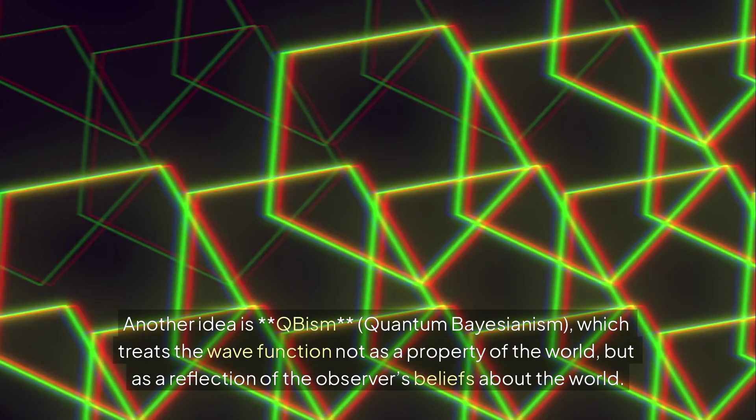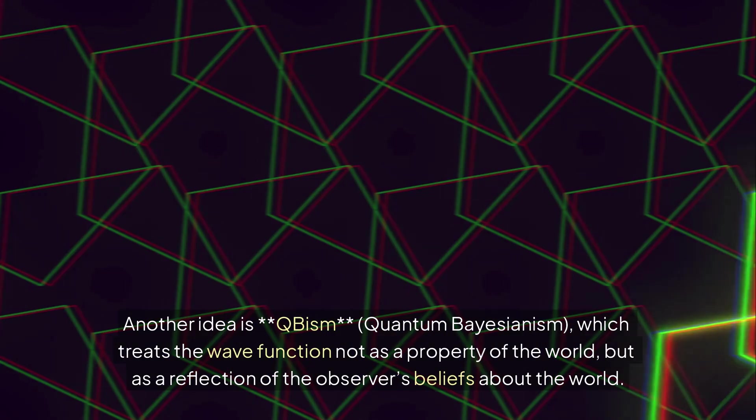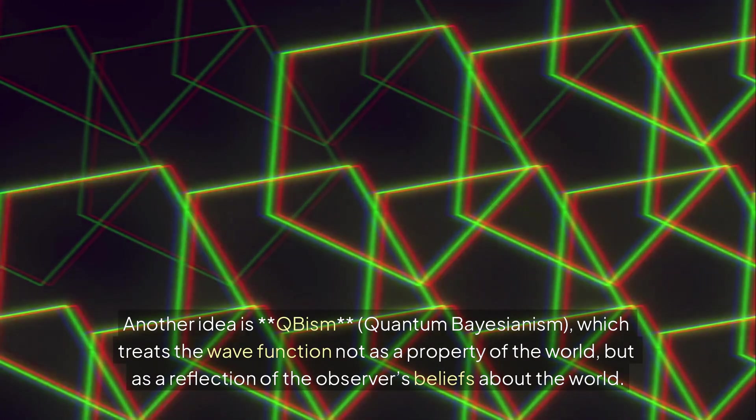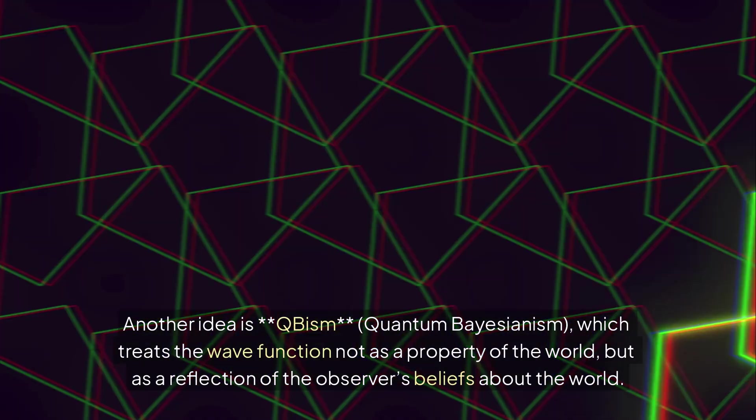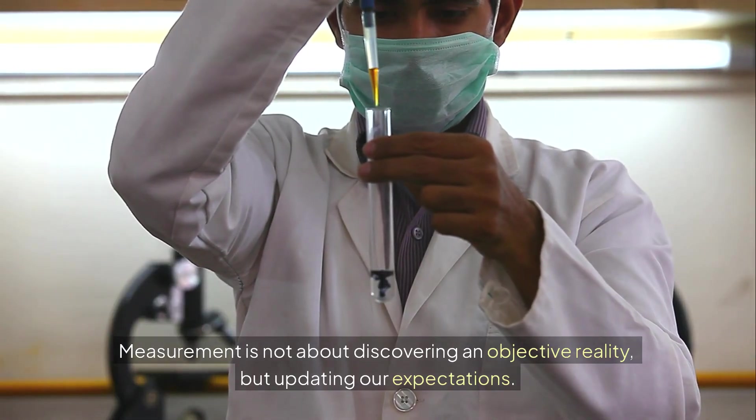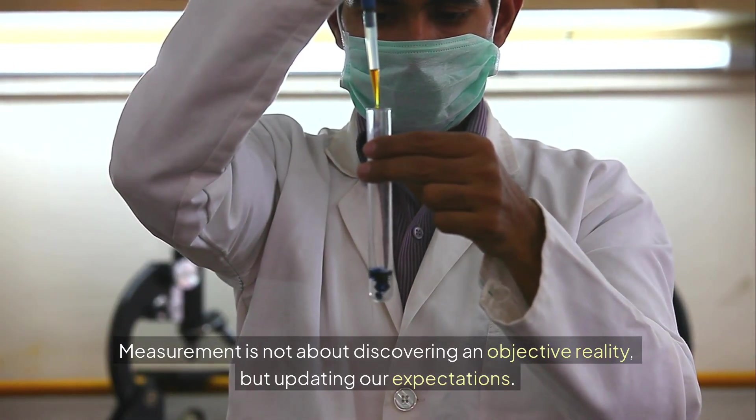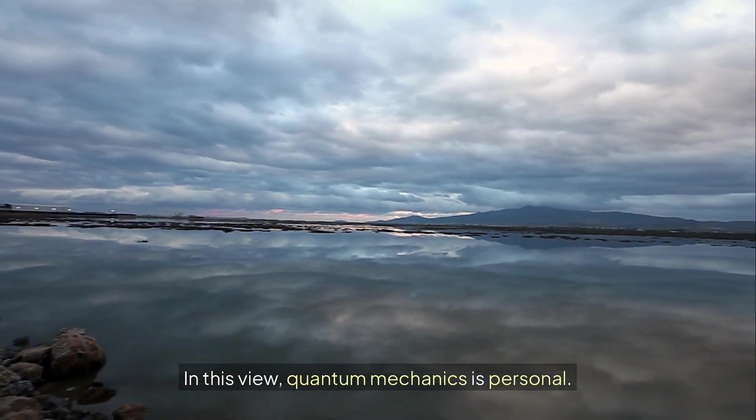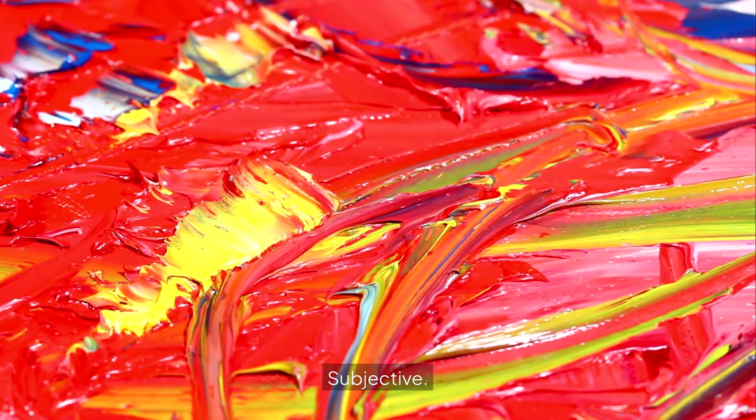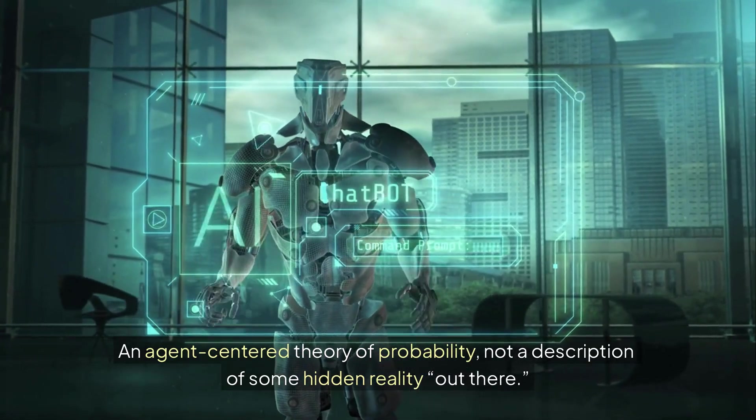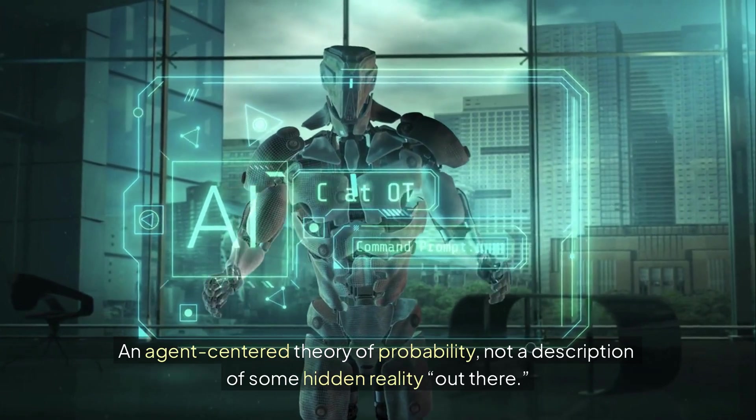Another idea is quantum Bayesianism, which treats the wave-function not as a property of the world, but as a reflection of the observer's beliefs about the world. Measurement is not about discovering an objective reality, but updating our expectations. In this view, quantum mechanics is personal, subjective, an agent-centered theory of probability, not a description of some hidden reality out there.